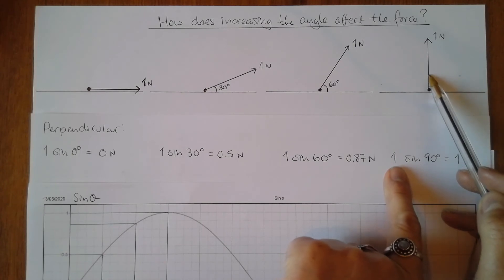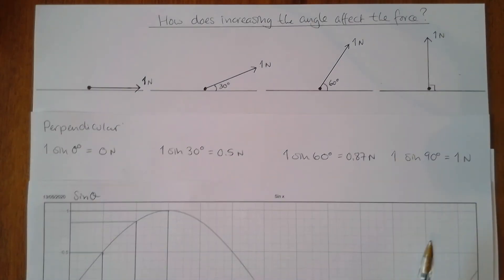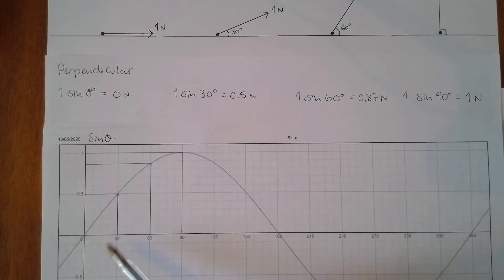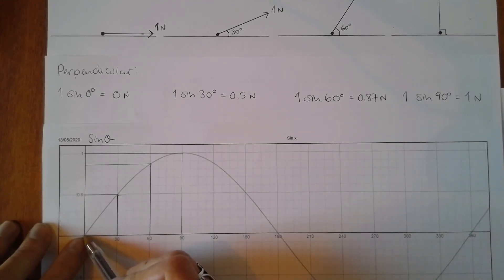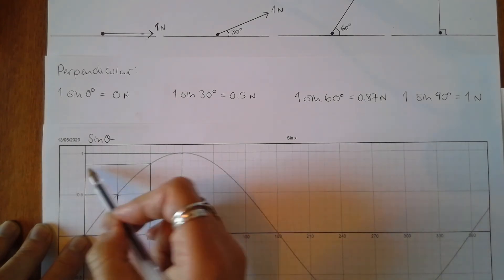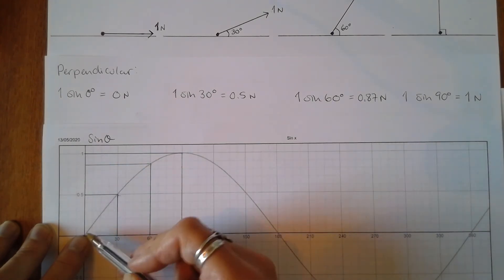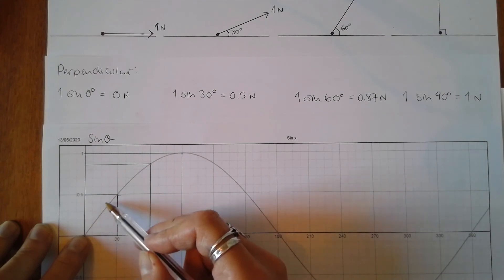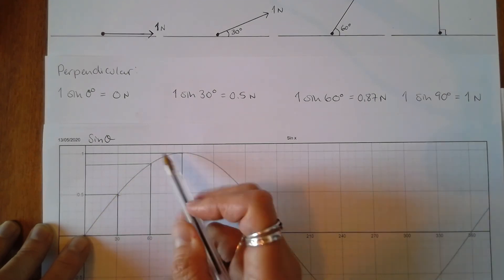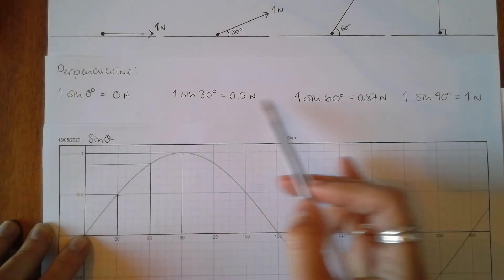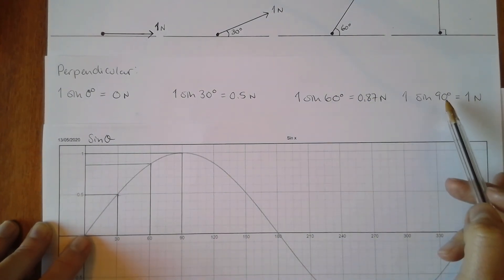Looking at the graph, we start at sine of zero, sine of 30, sine of 60, and sine of 90. So as the angle increases, so does the sine value, and so does the magnitude of the force in the perpendicular direction.